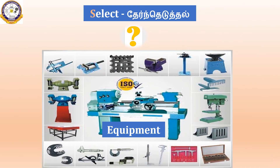The third step in process planning is Select — select the equipment and machines and tools to be used in manufacturing.